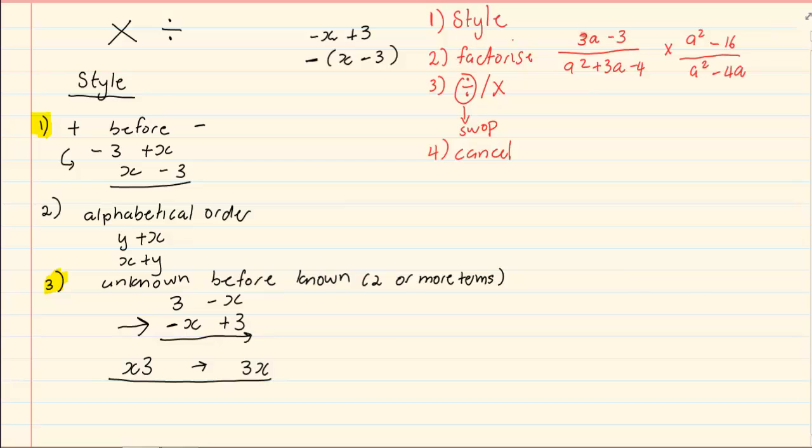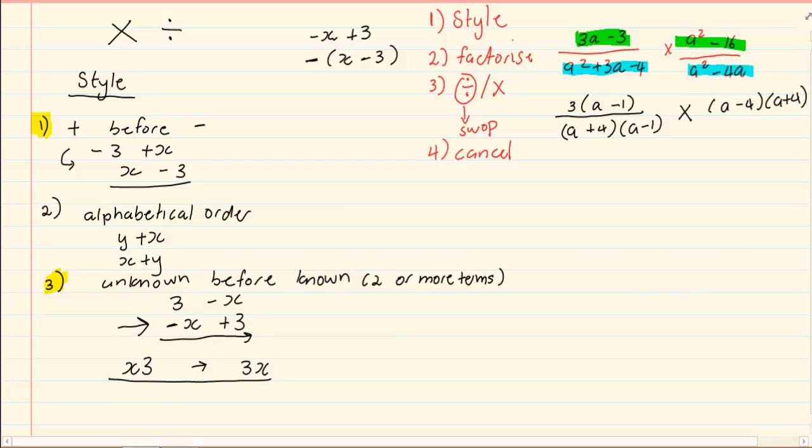Now we need to factorize. In the first expression, we have three as a common. In the second expression, it is a trinomial. So we have a plus 4 into a minus 1 times. We have difference of two squares, a minus 4, a plus 4. And at the bottom, we have take out a common, a into a minus 4.